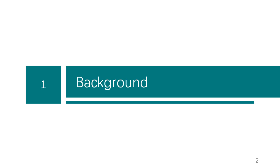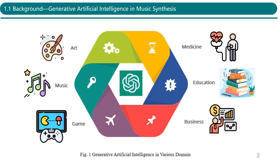Firstly, this is the research background. I will introduce my research covering four aspects: introduction, method, experiment, and conclusion. Generative Artificial Intelligence has achieved great success in fields such as art, business, music, education, and more, due to its automatic content generation capability.